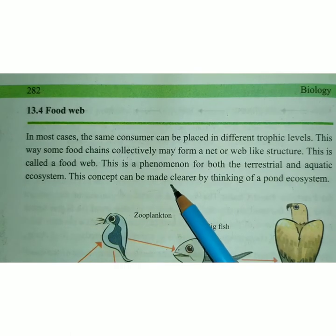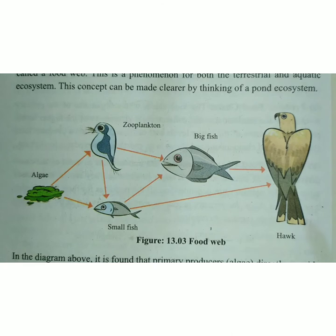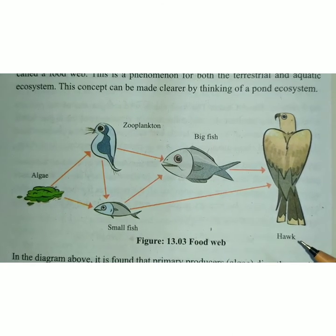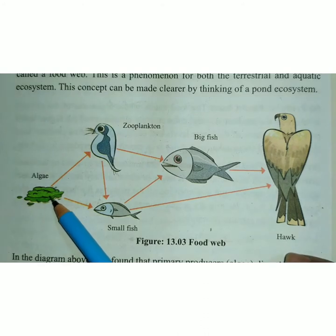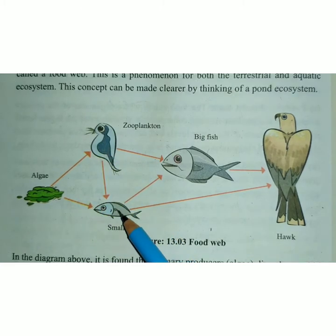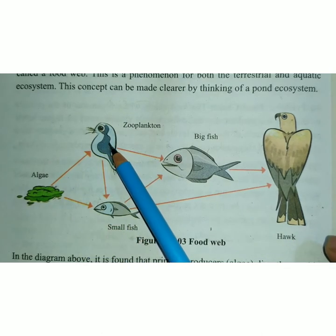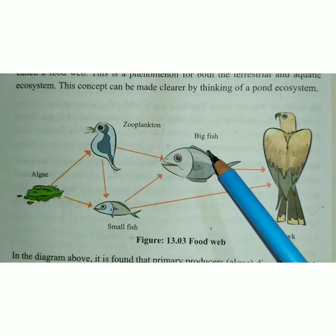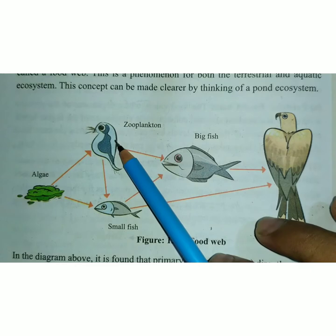This concept can be made clear by thinking of a pond ecosystem. Here is a figure of a food web. There are many food chains present in a pond ecosystem. For example, there is the producer algae, then first-level consumers: zooplankton or small fish. Zooplankton consume the producer, and then the second-level consumer is big fish. Big fish also consume zooplankton and small fish.